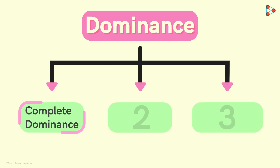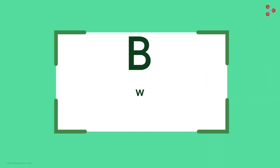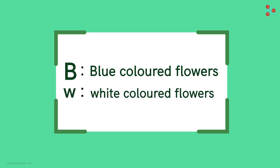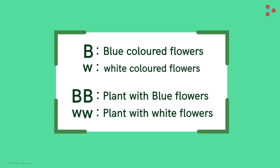Based on gene interactions, dominance is categorised into three types: complete dominance, which is very common in nature, and incomplete and co-dominance, which are relatively rare. Let's review all three types with one common and simple example. We can hypothetically take the alleles capital B and lowercase w to represent different flower colours — B for blue (dominant) and w for white (recessive), with genotypes BB and WW for the homozygous varieties.